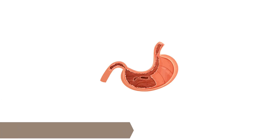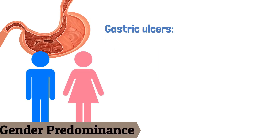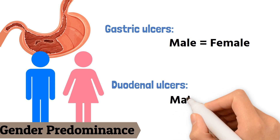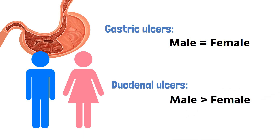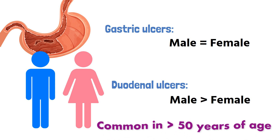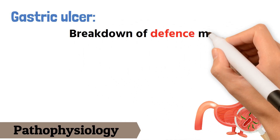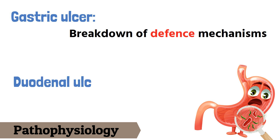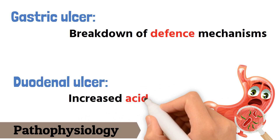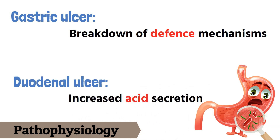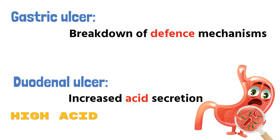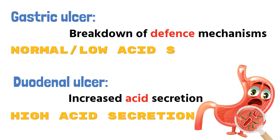Gender-wise, both males and females are affected equally in gastric ulcers, but in duodenal ulcers there is a male predominance. Both types are common in patients aged more than 50 years. The causative factor behind gastric ulcers is breakdown of defense mechanisms, whereas in duodenal ulcers it is increased acid secretion — hence duodenal ulcers have high acid secretion while gastric ulcers can have normal or low acid secretion.